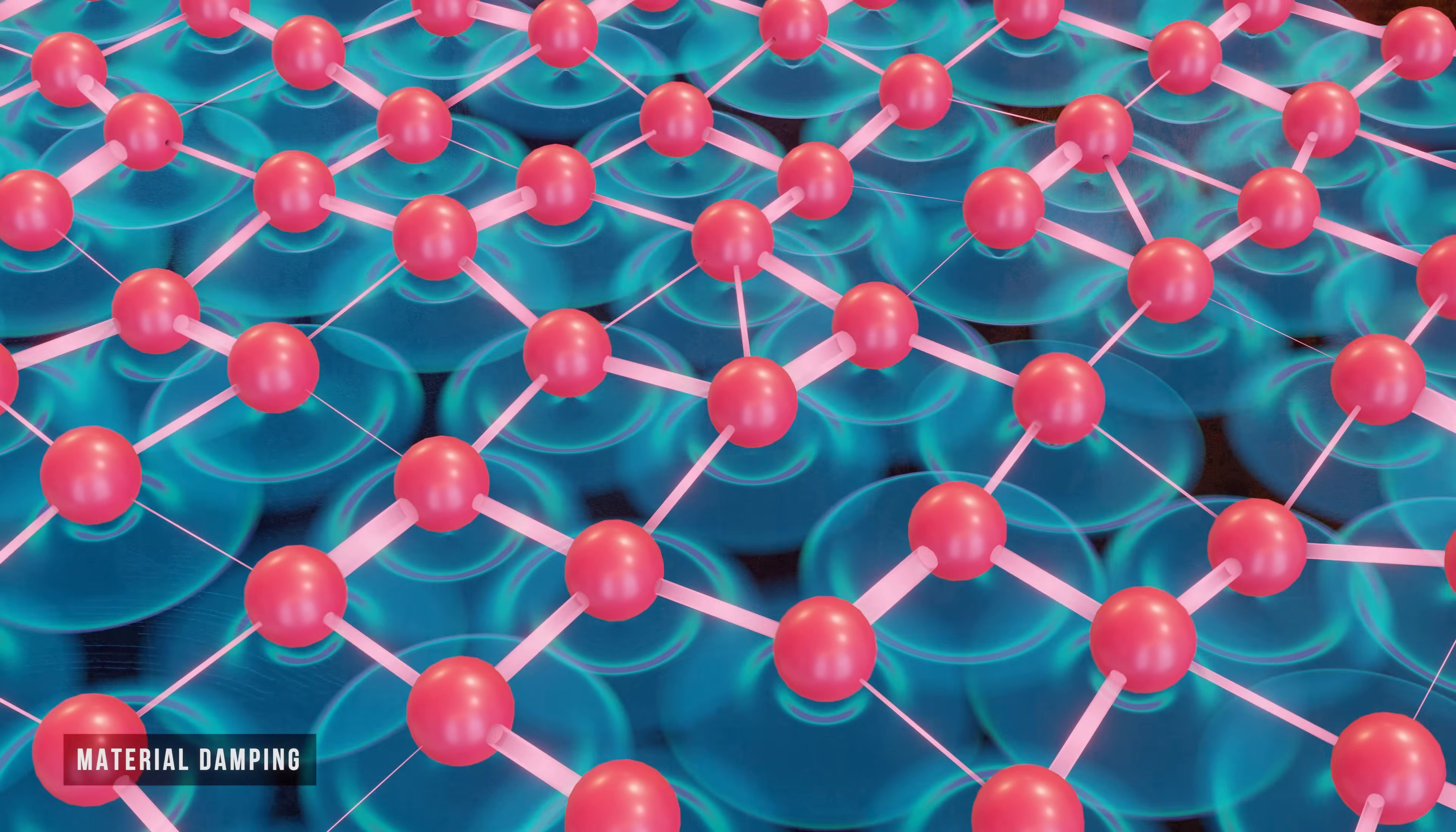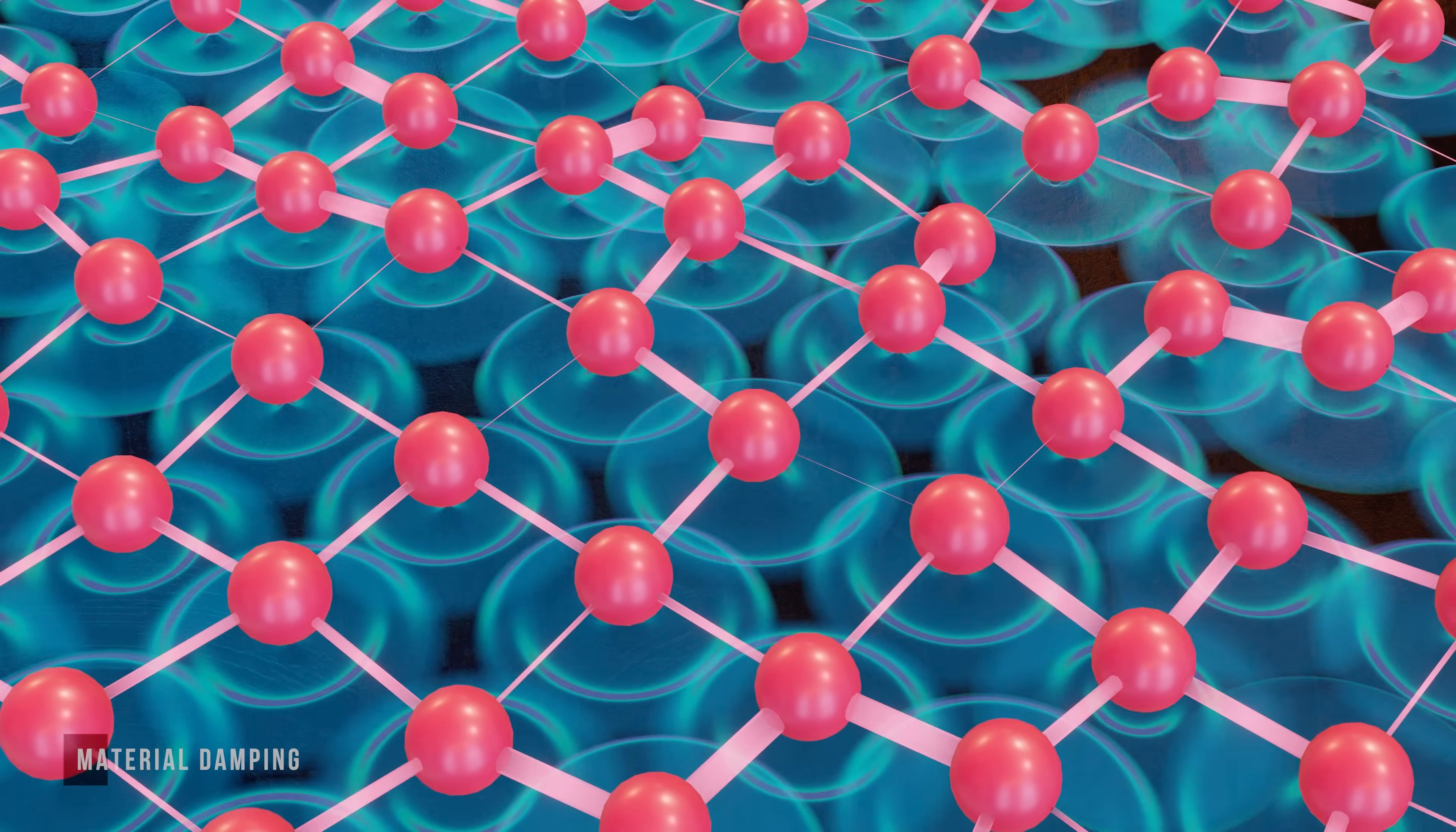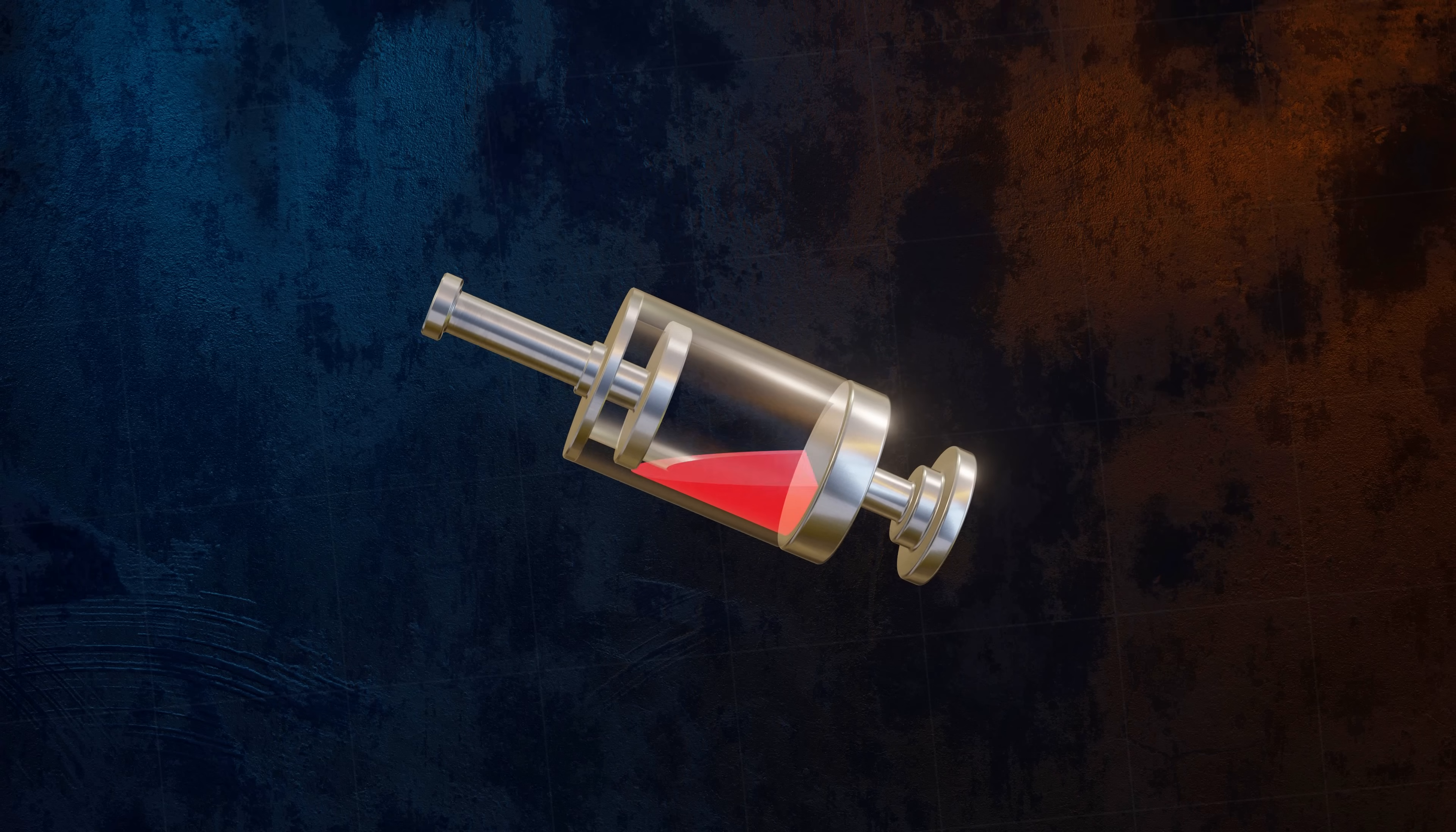To improve our spring mass model, we can lump the damping from all of the different sources together and represent them by a single damping device called a dashpot, which is essentially a plunger that moves through a liquid-filled cylinder. Whenever the plunger moves, a force will act to oppose its displacement, and the magnitude of this damping force is proportional to the velocity of the displacement.